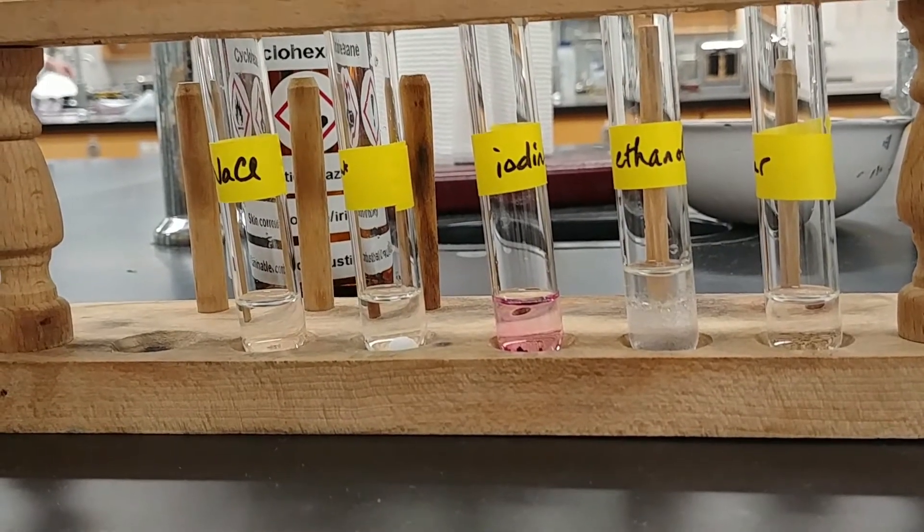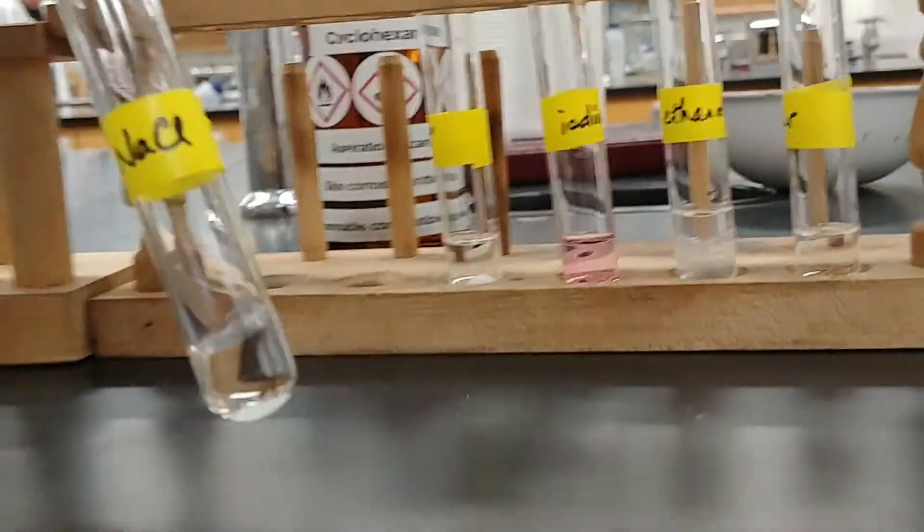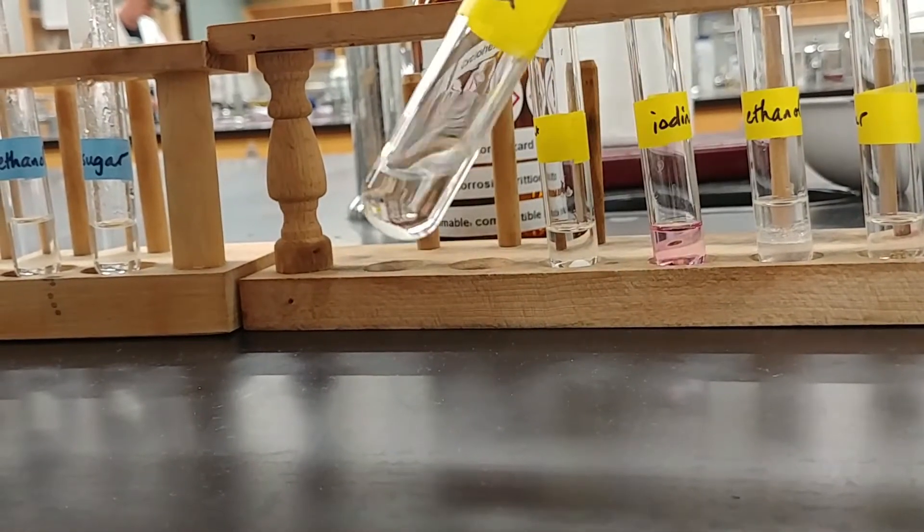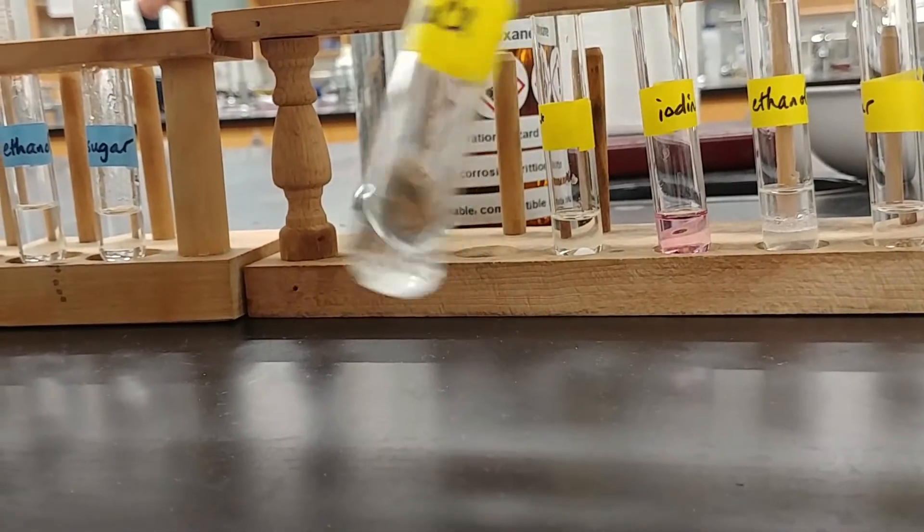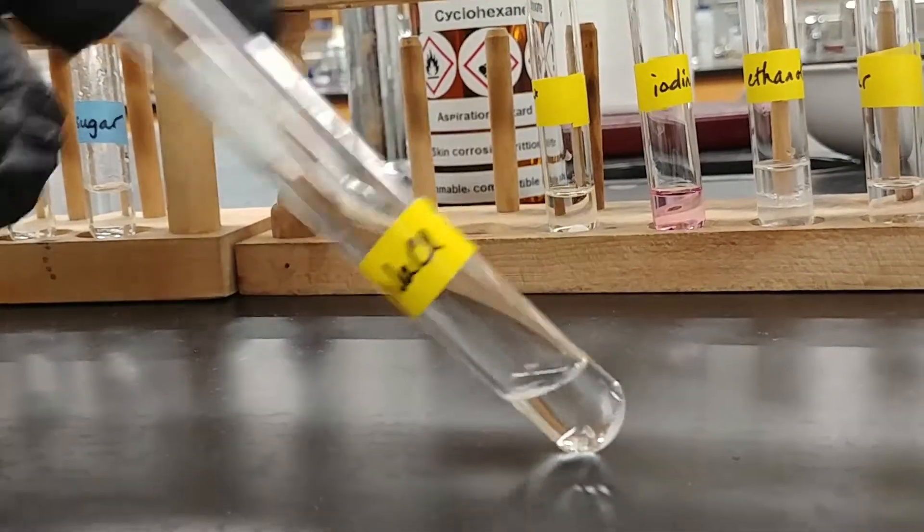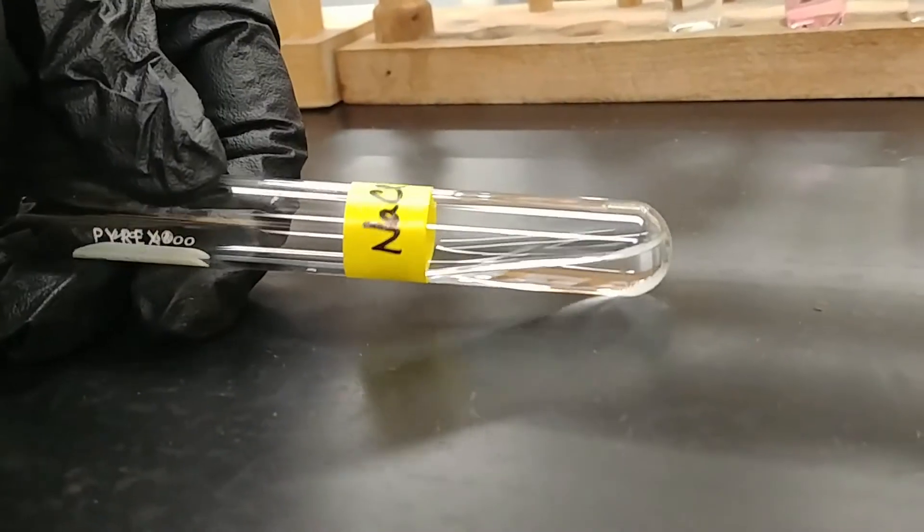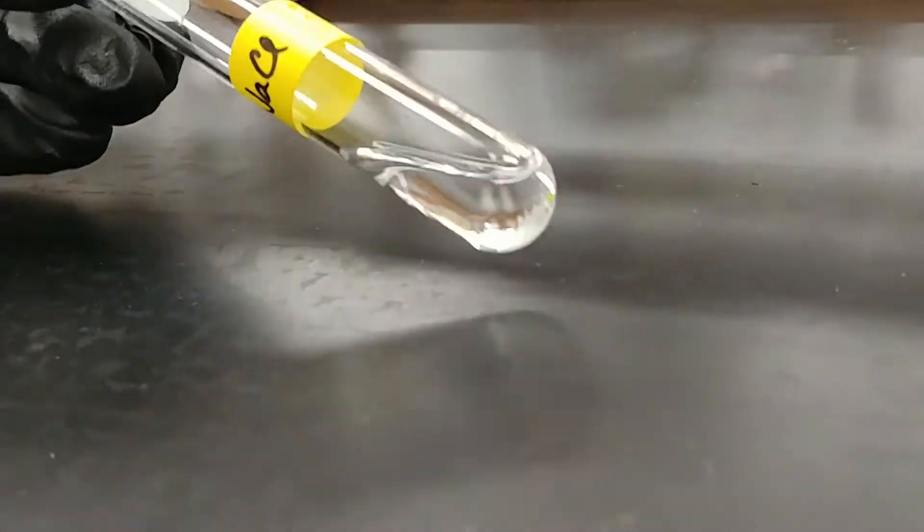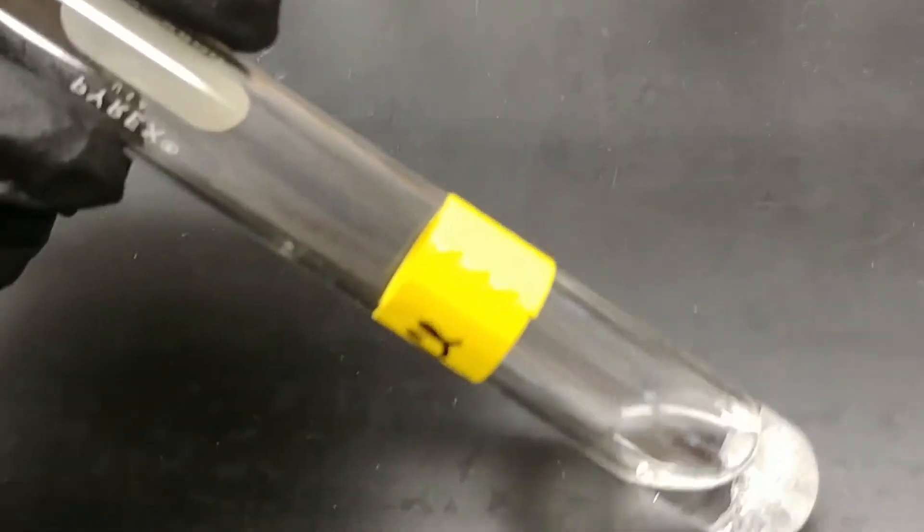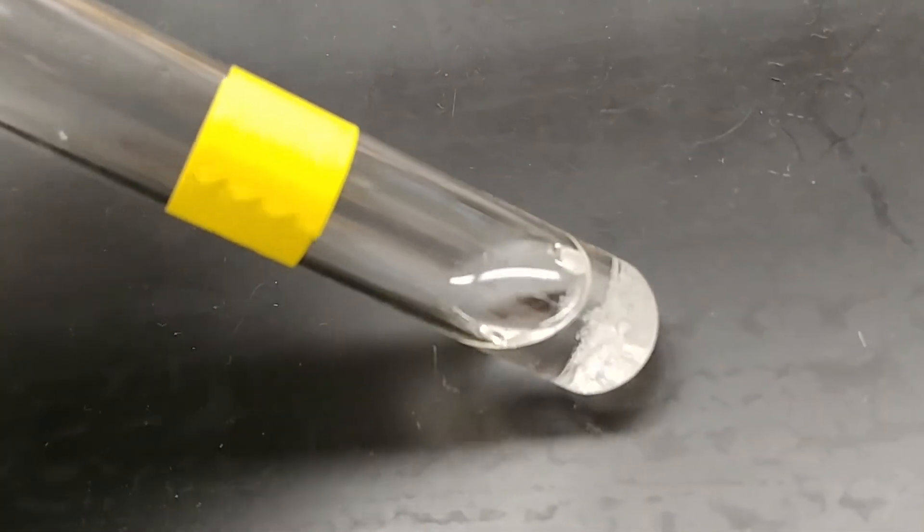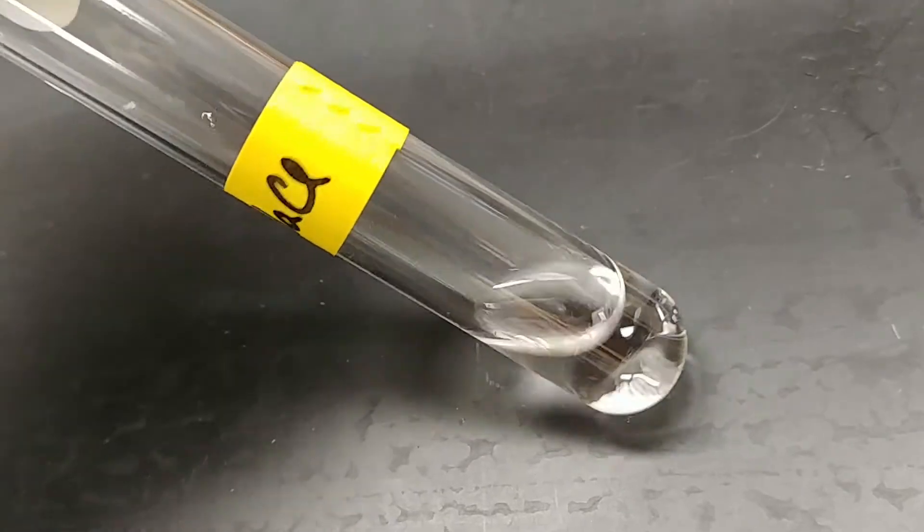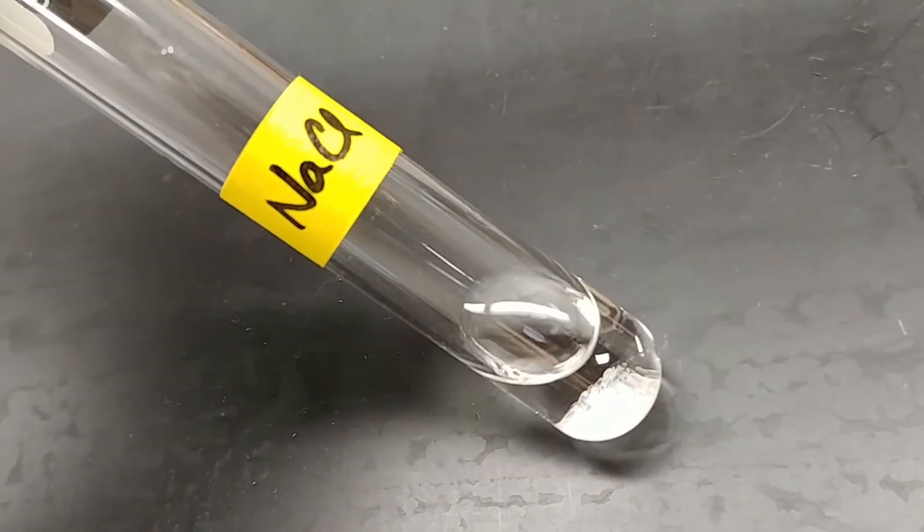So these test tubes that I have marked in yellow, I've added the cyclohexane solvent to our solutes. This was the sodium chloride. Now take a close look, see what you can see in terms of the solid. We may even pan up above a little bit so you can see what's going on in that test tube. So again, this is the sodium chloride and the cyclohexane.